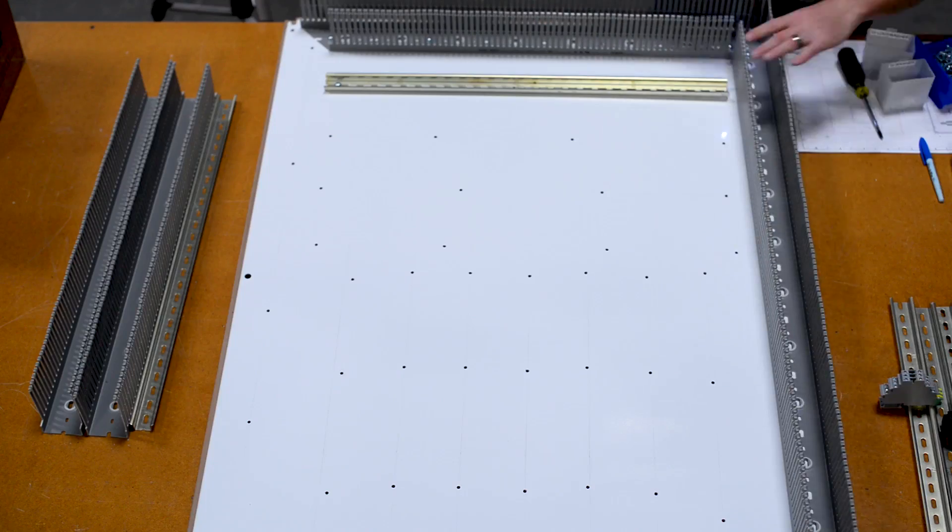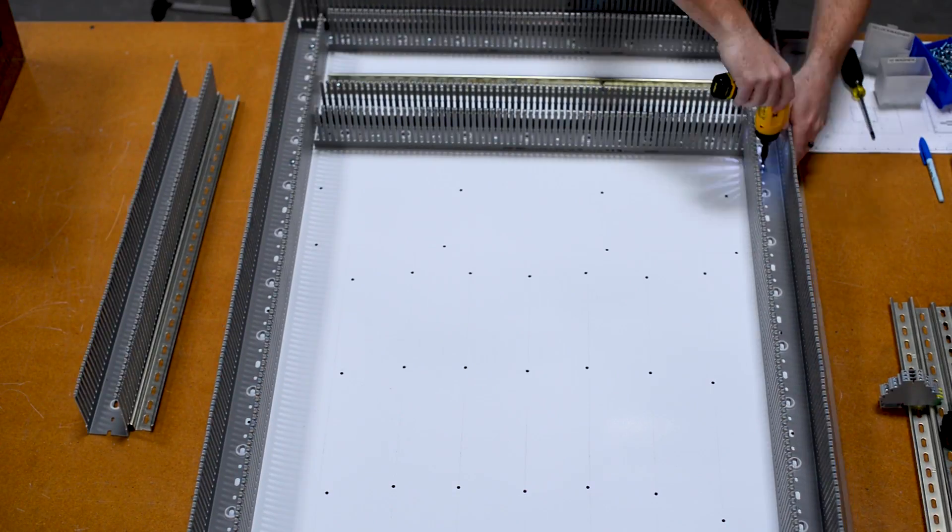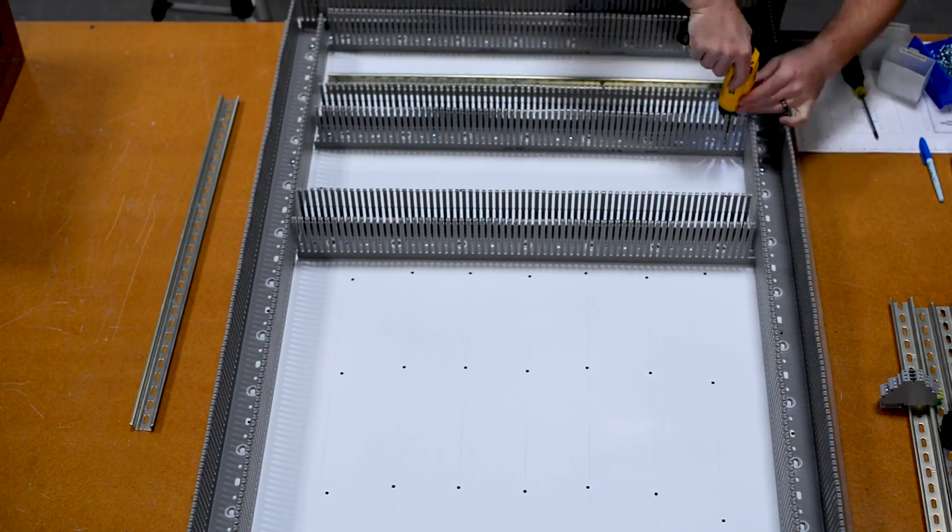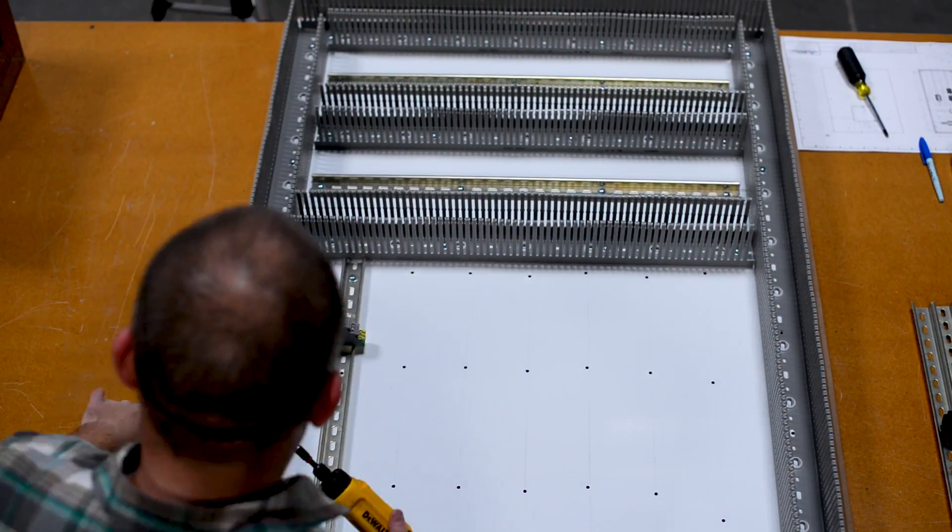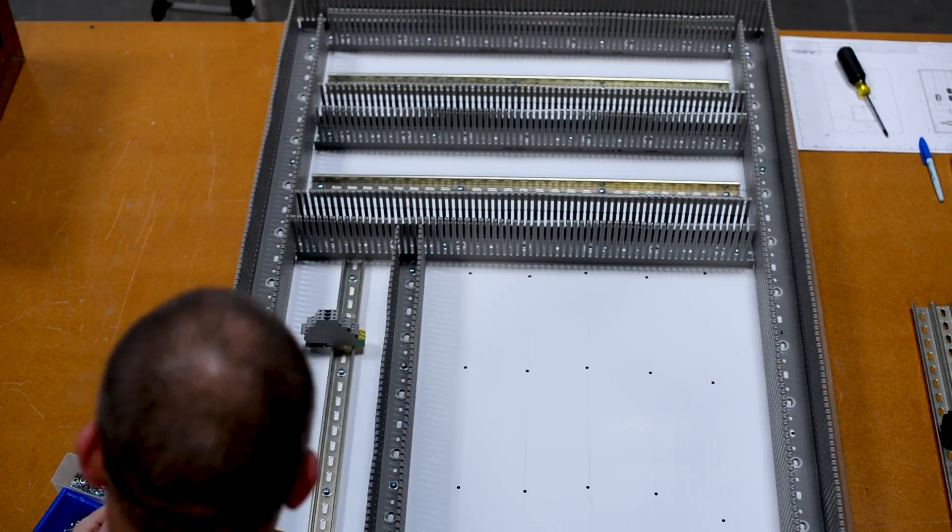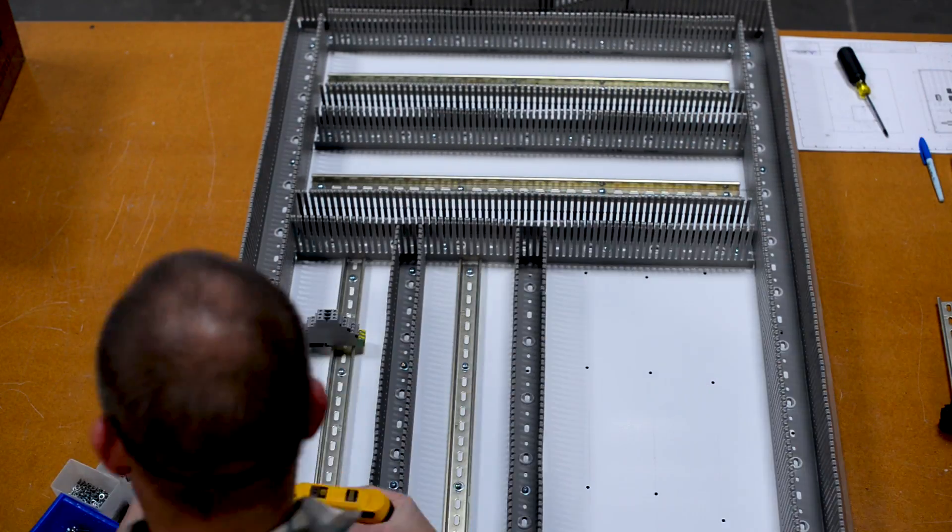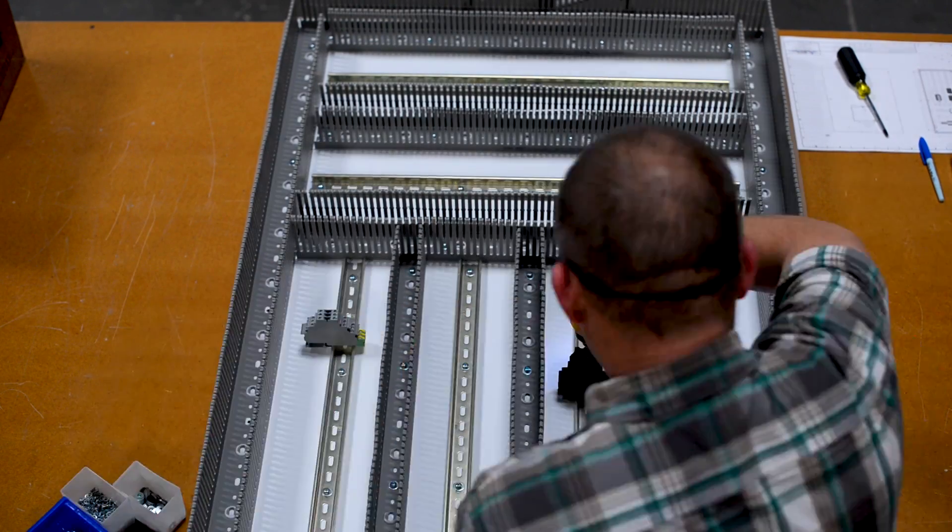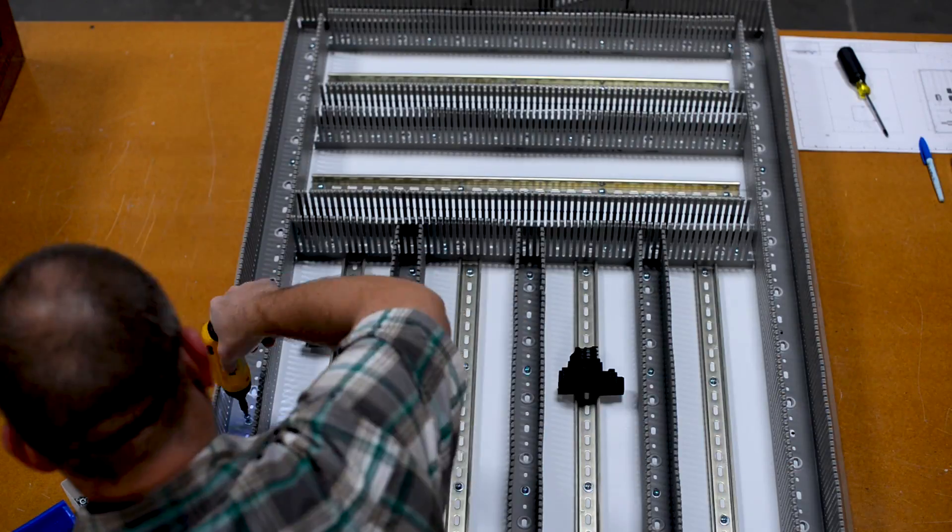So each point that we secure the DIN rail and wire ducting to, we want to use all of that hardware to make sure that it is secured very tightly and will not come loose over time. Once we have the wire ducting and DIN rail fully secured on the panel, it's at this point that we start mounting the actual electrical hardware to the DIN rail on the backplane.